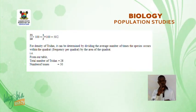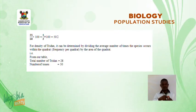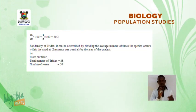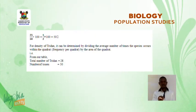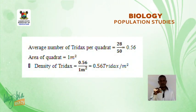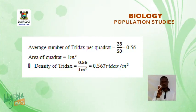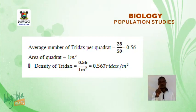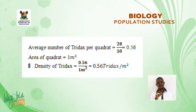For density of trig-darks: total number of trig-darks = 28; number of tosses = 50; average number of trig-darks per quadrat = 28 ÷ 50 = 0.56. Area of quadrat = 1 m². Therefore, density of trig-darks = 0.56 ÷ 1 m² = 0.56 trig-darks per m².